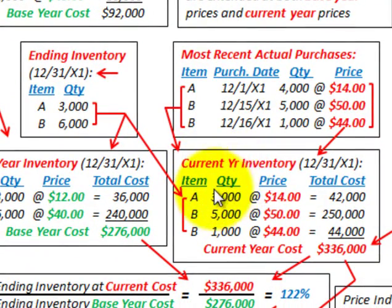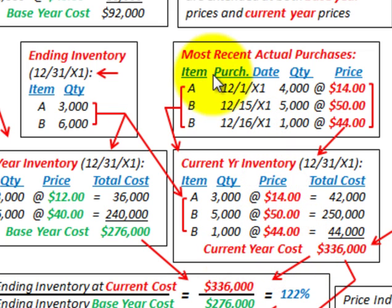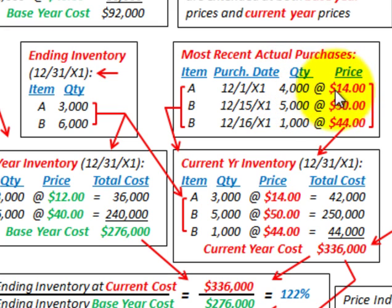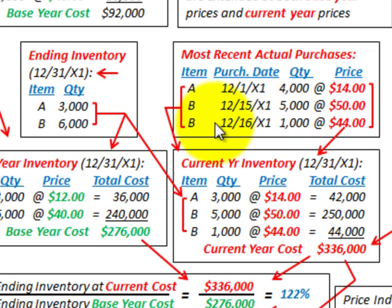Now we need to determine our current year-end inventory cost at 12/31/X1 using the most recent or actual purchases. For Item A, we had a purchase on 12/01 of 4,000 units at a current price of $14 each. For Item B, there were two purchases: one on 12/15 for 5,000 units at $50 each, and a second purchase on 12/16/X1 for 1,000 units at $44 each.